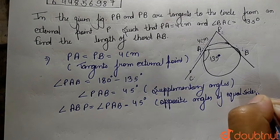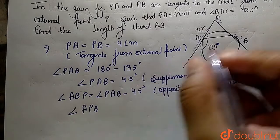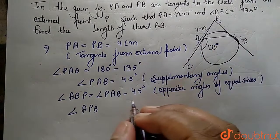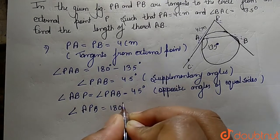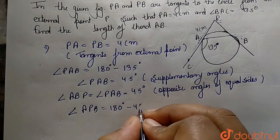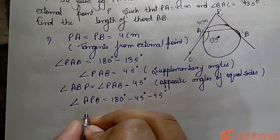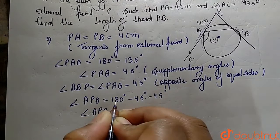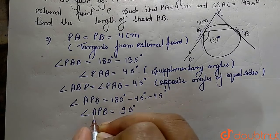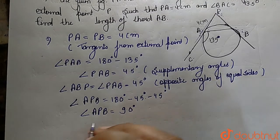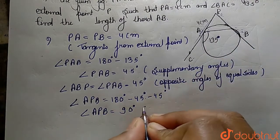Now, the value of angle APB equals 180 minus angle PAB minus angle ABP, which is 180 minus 45 minus 45, giving us 180 minus 90, which equals 90 degrees. So angle APB is 90 degrees.